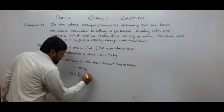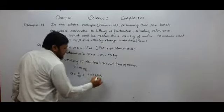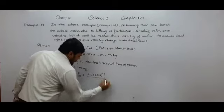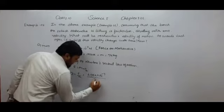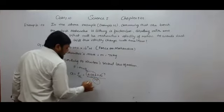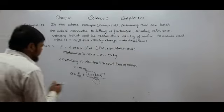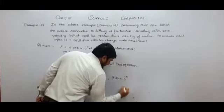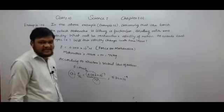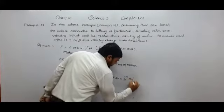We can calculate: acceleration is equal to force 4.002 multiplied by 10 raised to power minus 7, divided by mass of Mahindra, that is 75. If we calculate this, the value will be 5.34 multiplied by 10 raised to power minus 9. The unit of acceleration is meter per second square, as we have seen in the 9th standard.